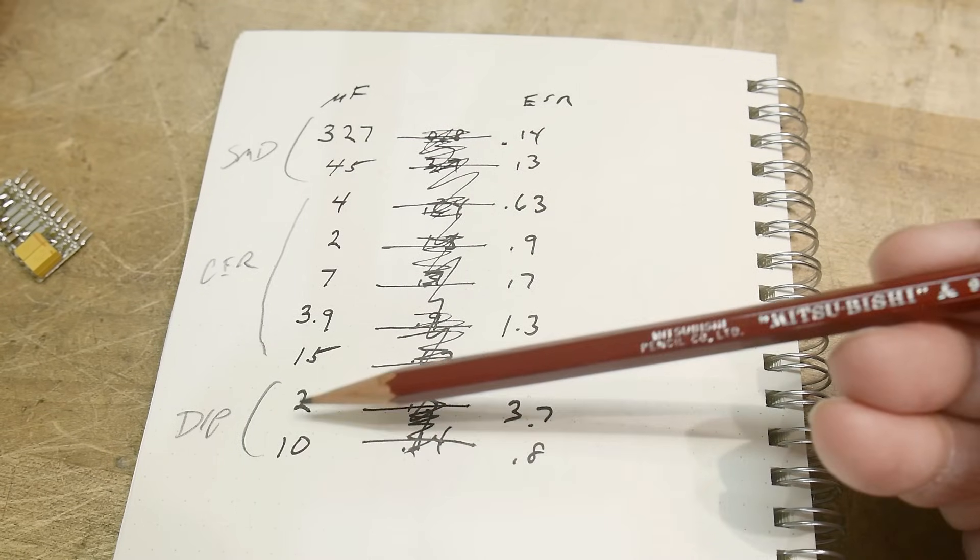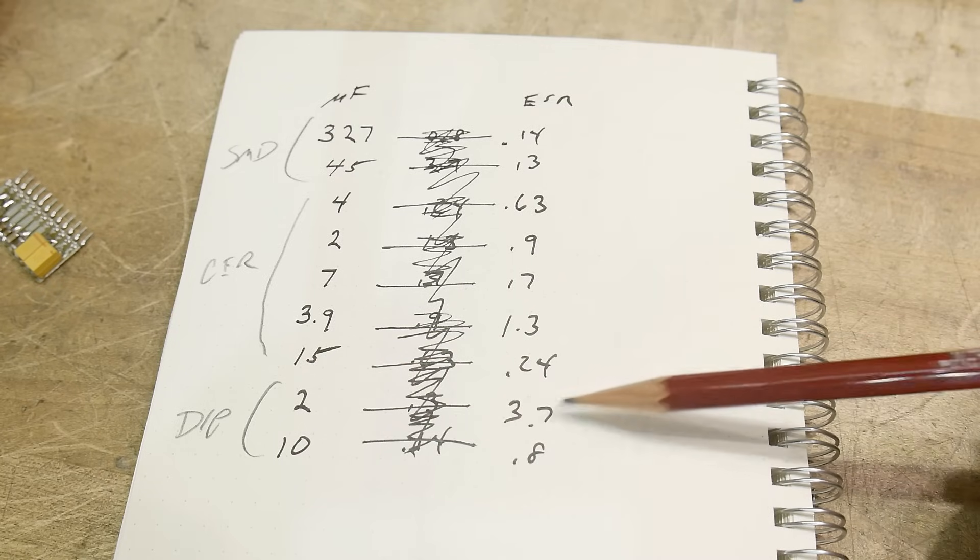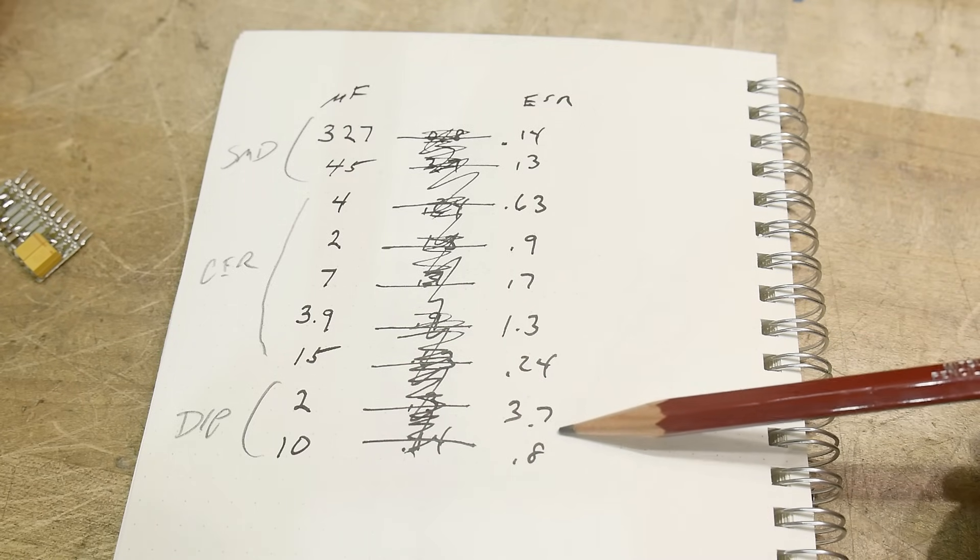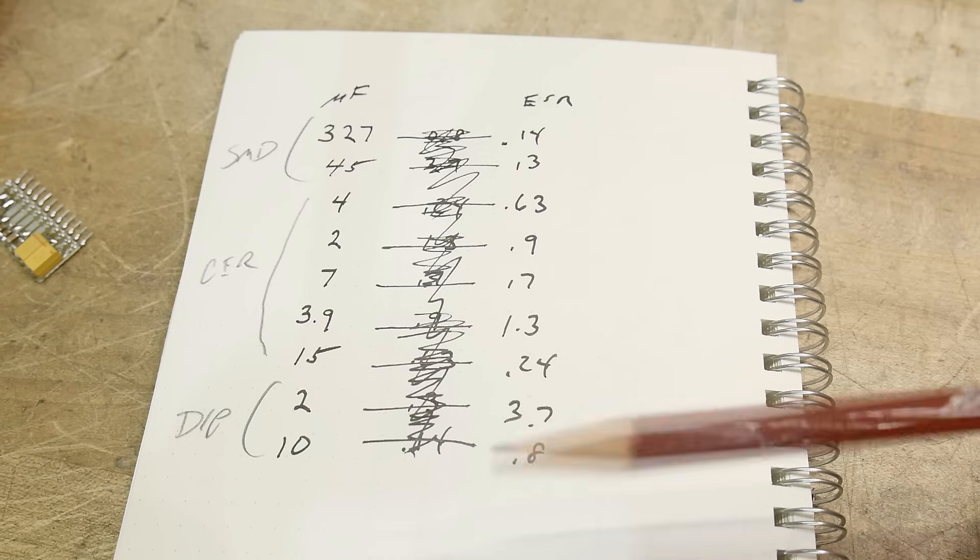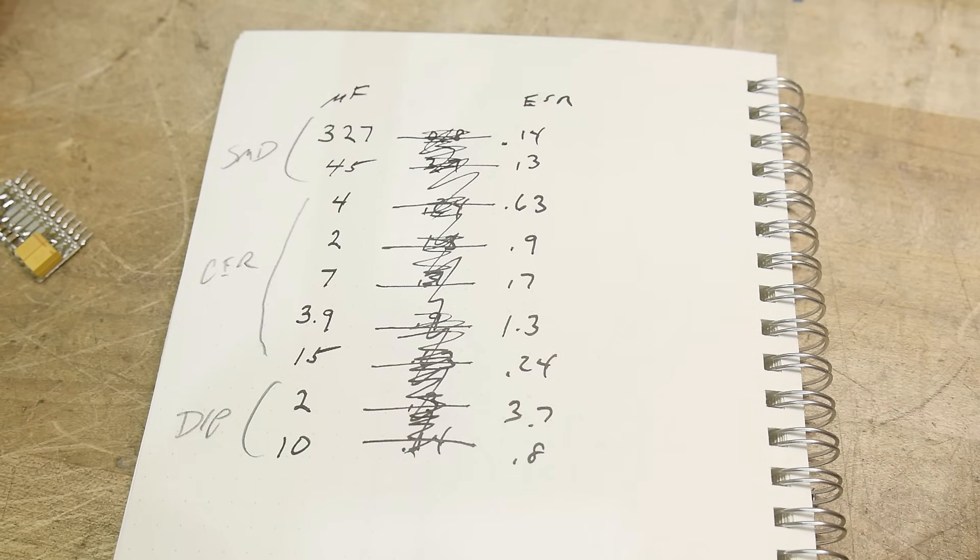If you're operating down here around the 2 microfarad range, expect to have a lot of ohms. And that's when the ceramics start shining. The ceramics are going to do a much better job down there.